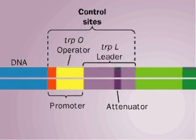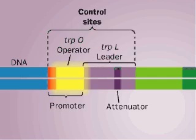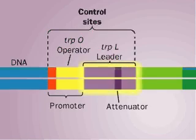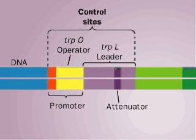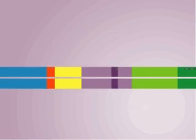Now let's look at the control sequences for the tryptophan operon. They include a promoter — the binding site for RNA polymerase — an operator, which overlaps the promoter, and a leader gene, TrpL, which has an attenuator sequence, which we'll also look at soon.